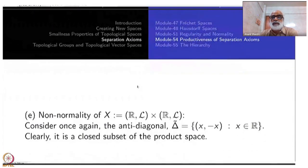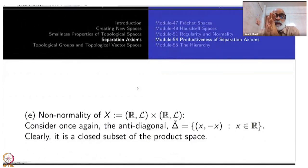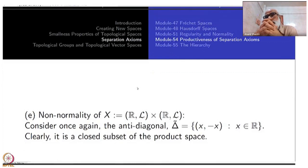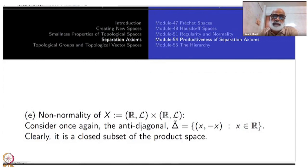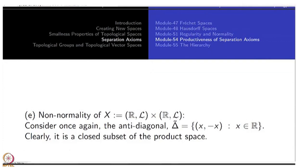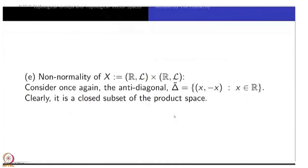Now we want to show that the product ℝ_L × ℝ_L is not normal. We just showed ℝ_L is regular, and the product of two regular spaces is regular, so we get a regular space that is not normal. How do we show non-normality? We go back and use that the anti-diagonal is a closed discrete subspace.